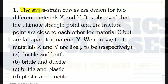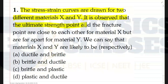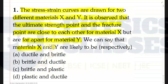The question is: stress-strain curves are drawn for two different materials X and Y. It is observed that the ultimate strength point and the fracture point are close to each other for material X, but far apart for material Y. We can say that materials X and Y are likely to be?